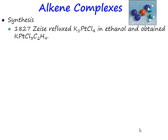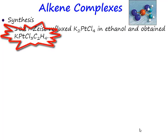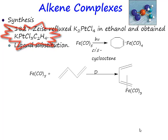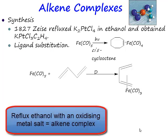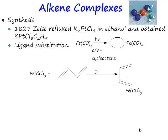And when he did that he got out some beautiful crystals. So you can make an alkene complex by taking ethanol and refluxing it with an oxidising metal salt. This is an example of ethanol actually being reduced in the coordination sphere of the metal by refluxing it.